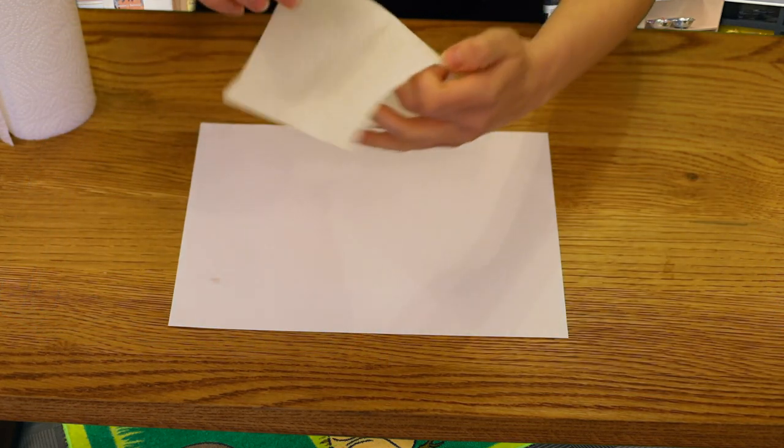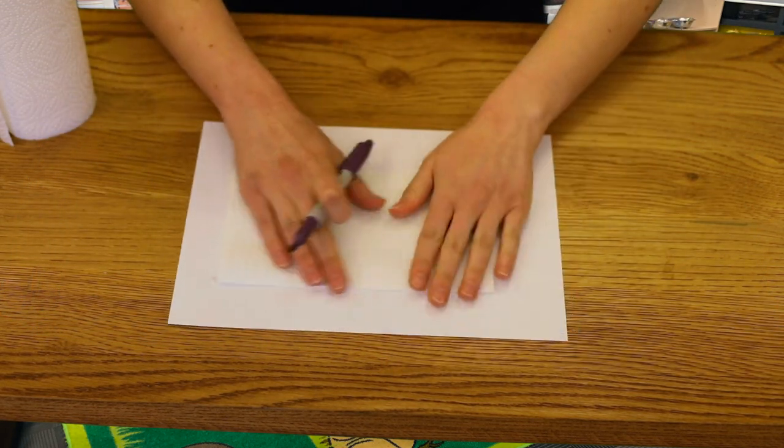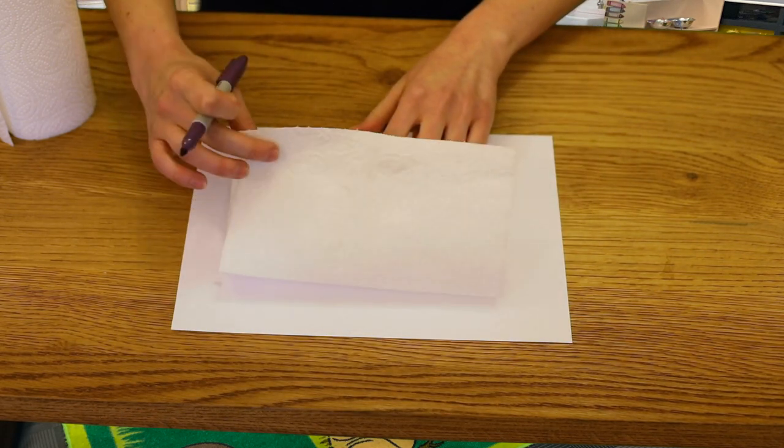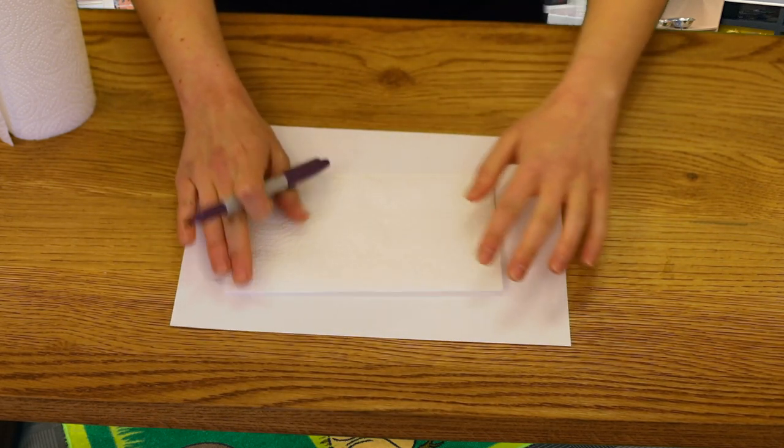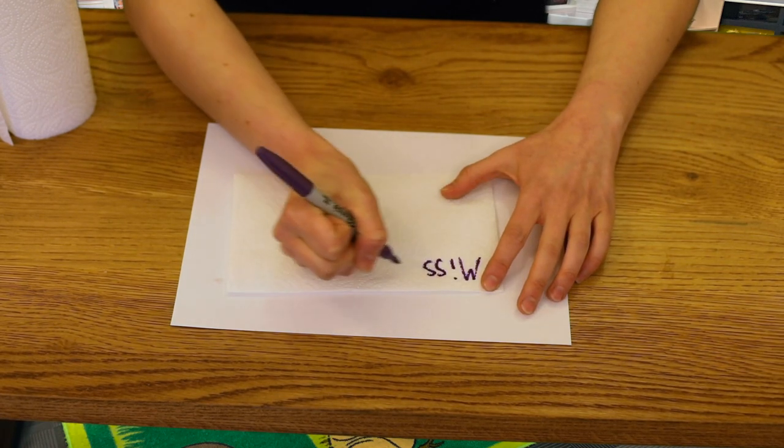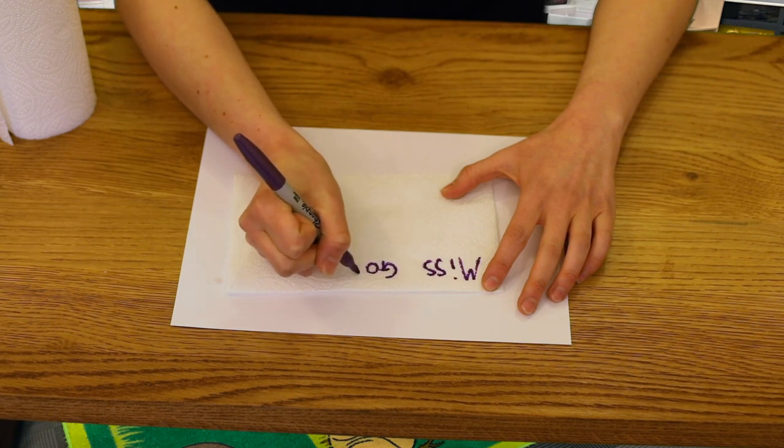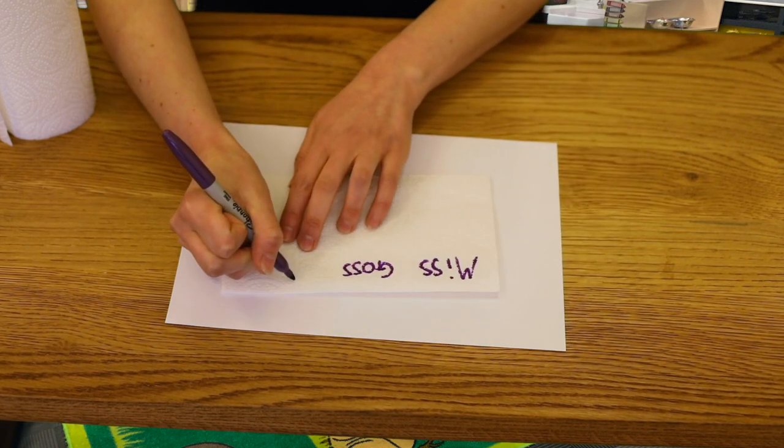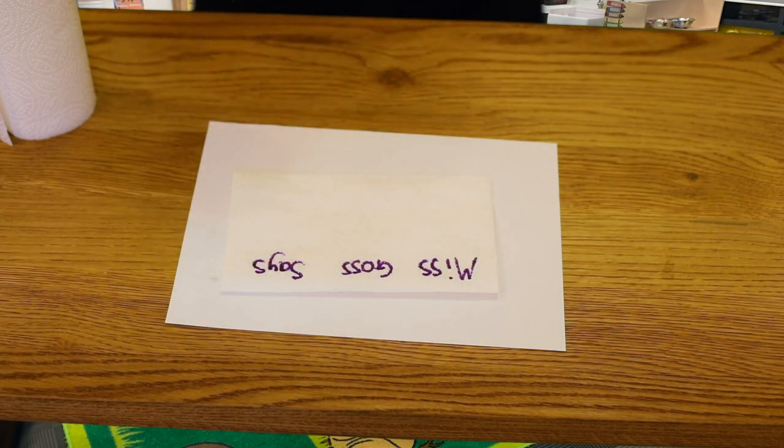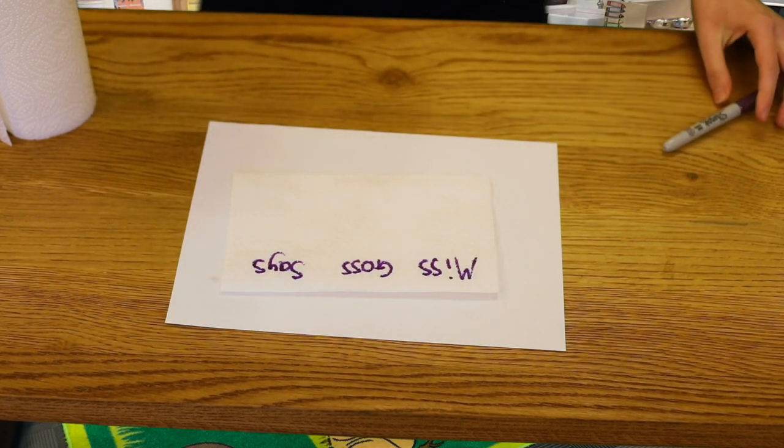Next I'm going to write my message. So I need to make sure that the paper is towards me and I can lift it up like that. That way it's along the top. I'm going to write Miss Goss says. And this is where I'm going to write my secret message.